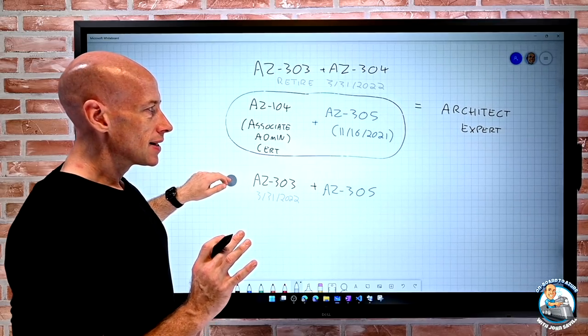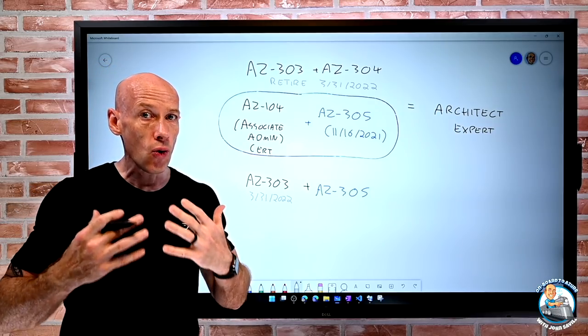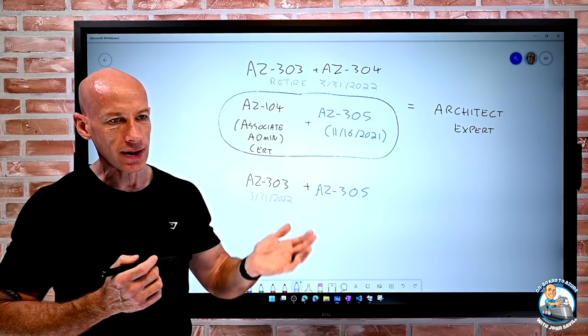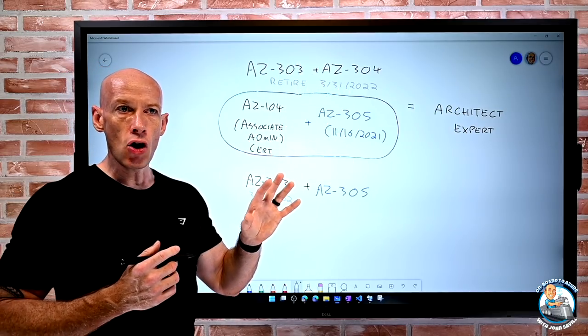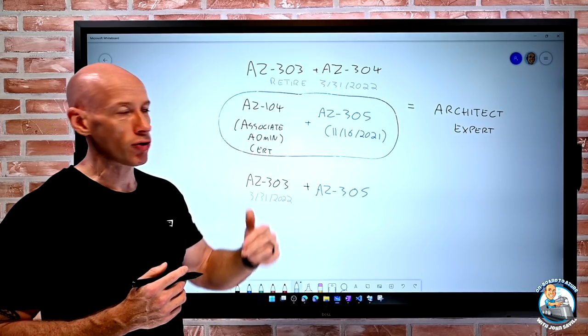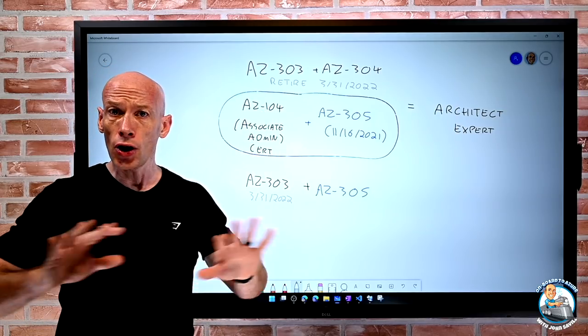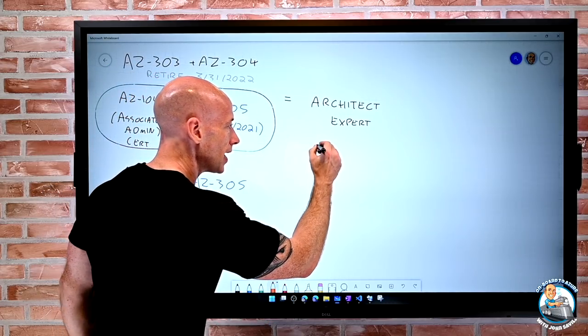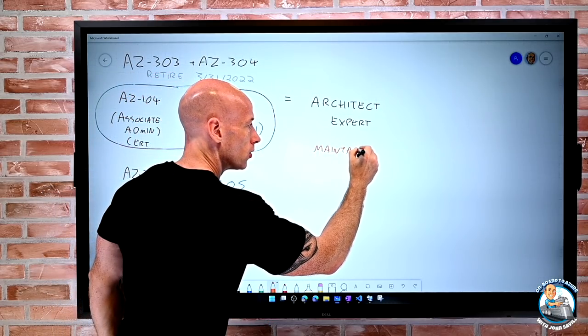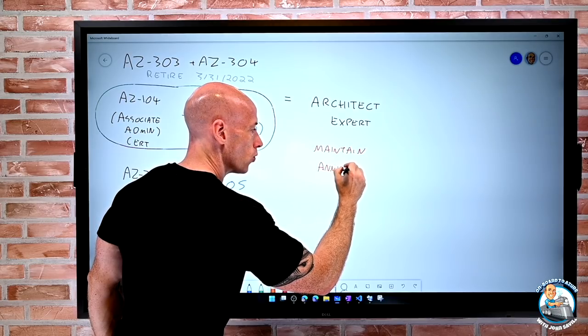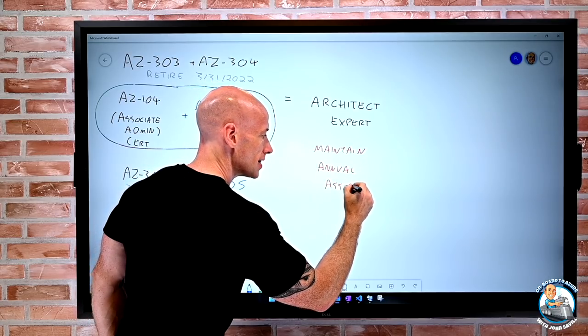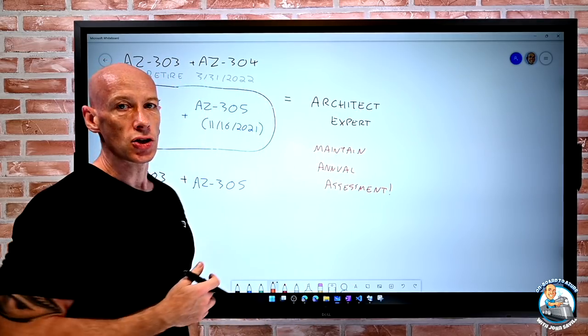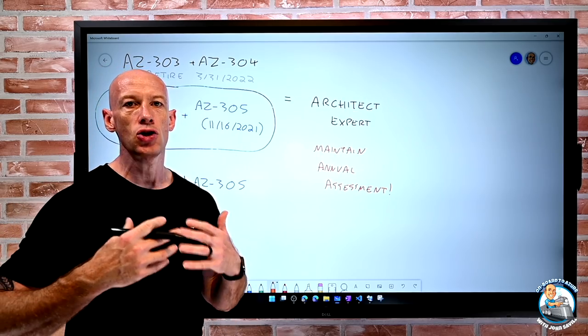And a really important note, this does not impact you if you already have your Architect cert certification. If you are already an Azure Solutions Architect Expert, this does not impact you. They're not retiring your current cert and now you have to go and take 305 or you have to go and get Associate Admin. No. If you already have your Architect Expert, you just maintain it like you do today with that annual assessment. That's all you do. So nothing is changing. If you already have your Architect Expert, this does not impact you. You do that annual renewal assessment as you already have been.